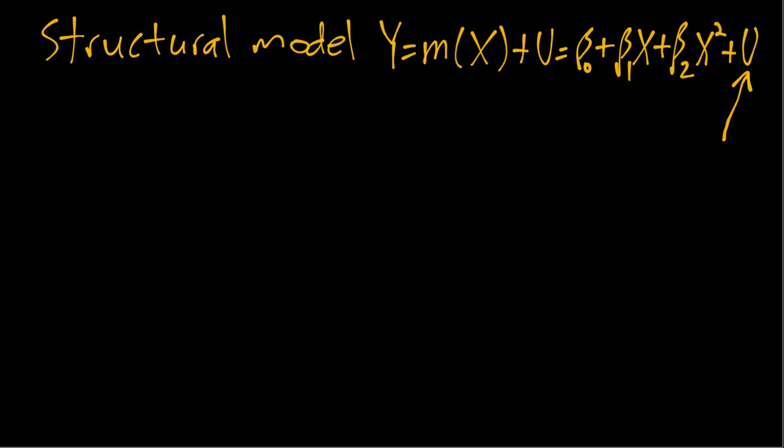This is everything that's not in the quadratic function of X that determines Y. Also, as in the linear case, it could be that U satisfies some nice statistical properties or it may not.